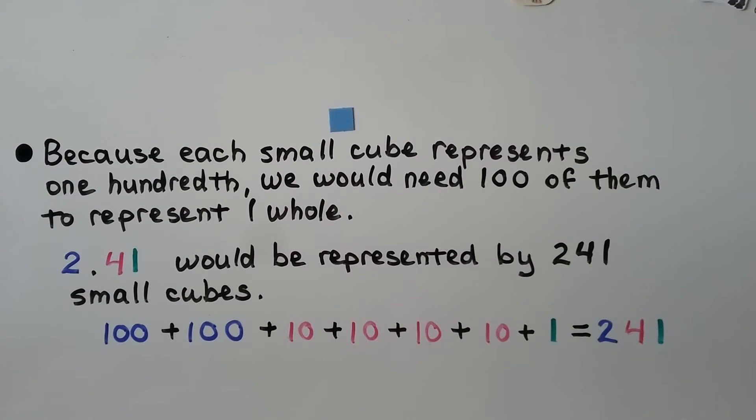Because each small cube represents one hundredth, we would need one hundred of them to represent one whole. 2 and 41 hundredths would be represented by 241 small cubes. The two whole would be 100 plus 100, that's 200. Then we would have four tens, and then one for one-hundredth. That's 241.